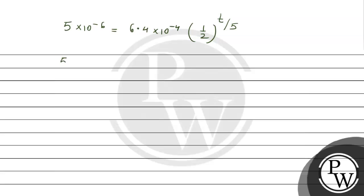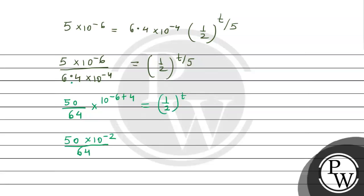Solving this: 5 into 10 to the power minus 6 divided by 6.4 into 10 to the power minus 4 equals 1 by 2 raised to power t upon 5. This becomes 50 divided by 64, 10 to the power minus 6 plus 4 gives 10 raised to power minus 2 divided by 64, and this equals 1 by 2 raised to power t by 5.